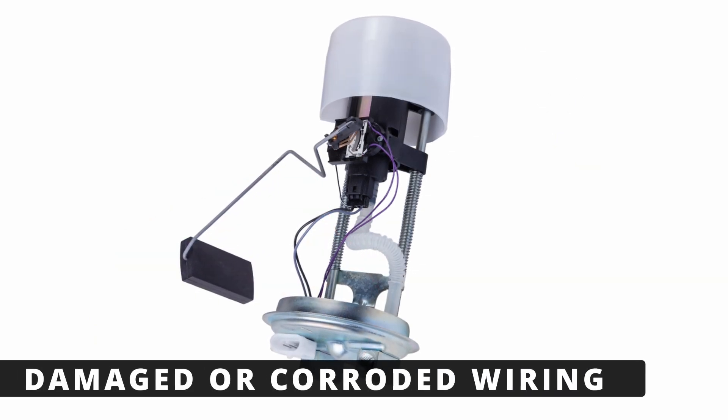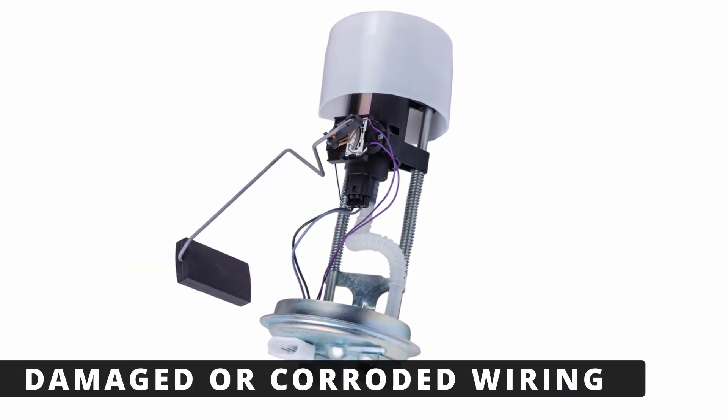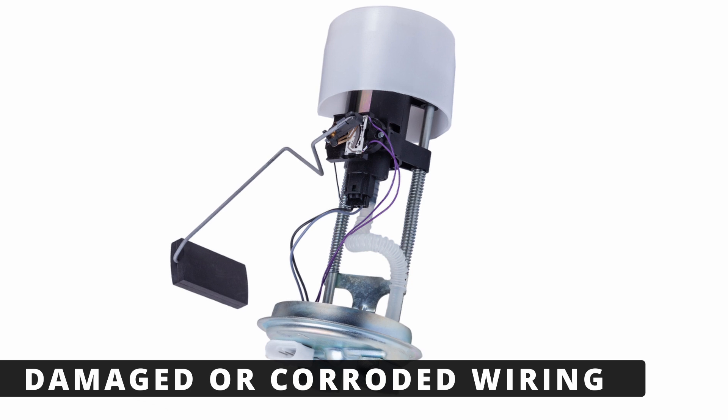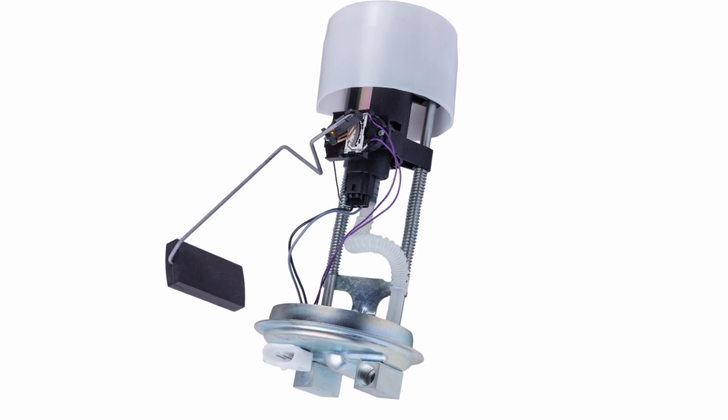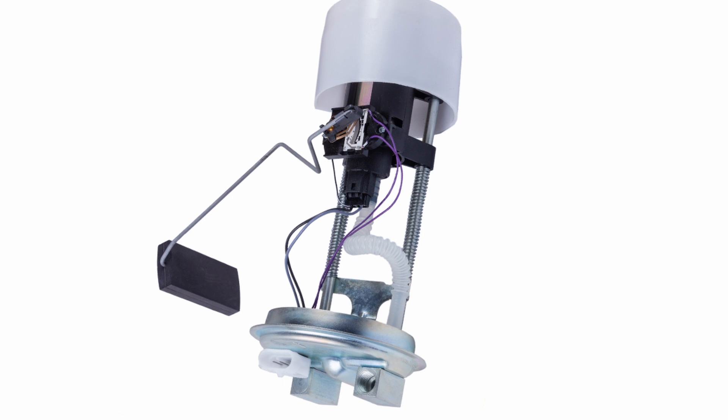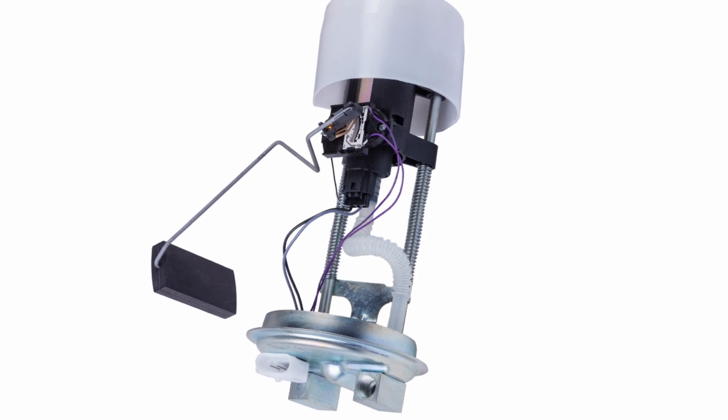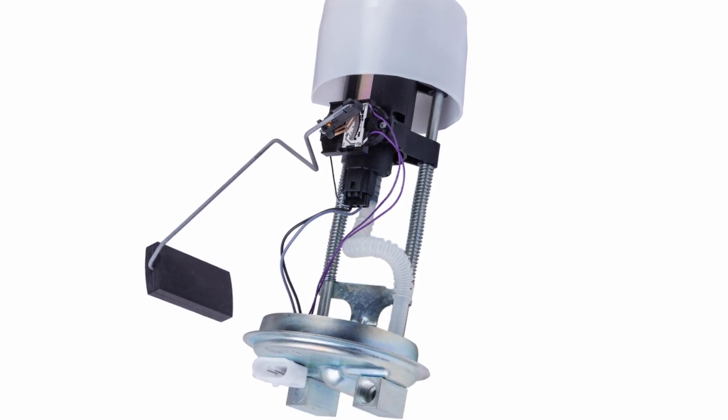The next possibility is damaged or corroded wiring going to the fuel level sensor. If the wiring is broken, shorted, or has a loose connection, the ECM may receive faulty signals, causing the code to appear. Check for any exposed, melted, or broken wires leading to the sensor.